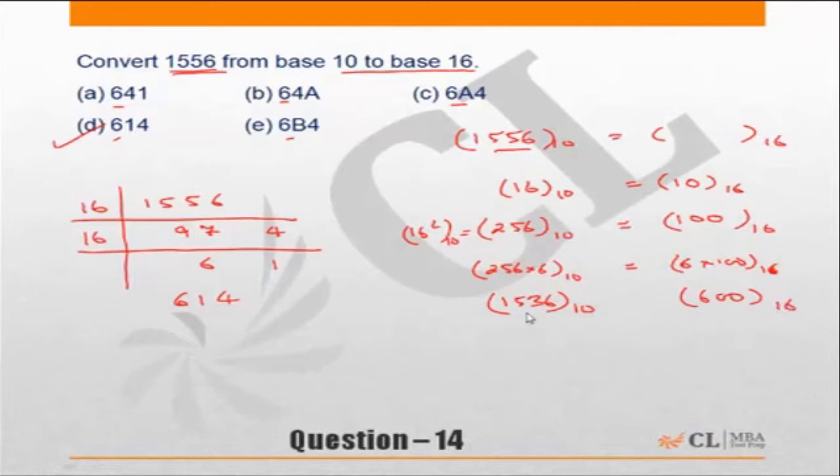The number is 1556. We've already accounted for 1536, so what you're left with is 20. Out of this 20, 16 base 10 will be 10 base 16, and then you're left with 4. 4 comes as is because it's a unit digit only. So the answer has to be 614. Correct answer: choice D.